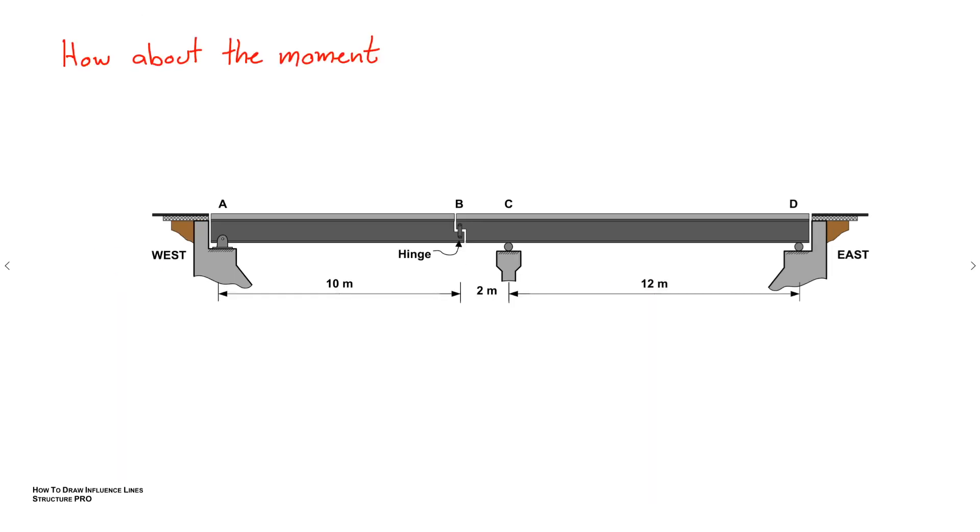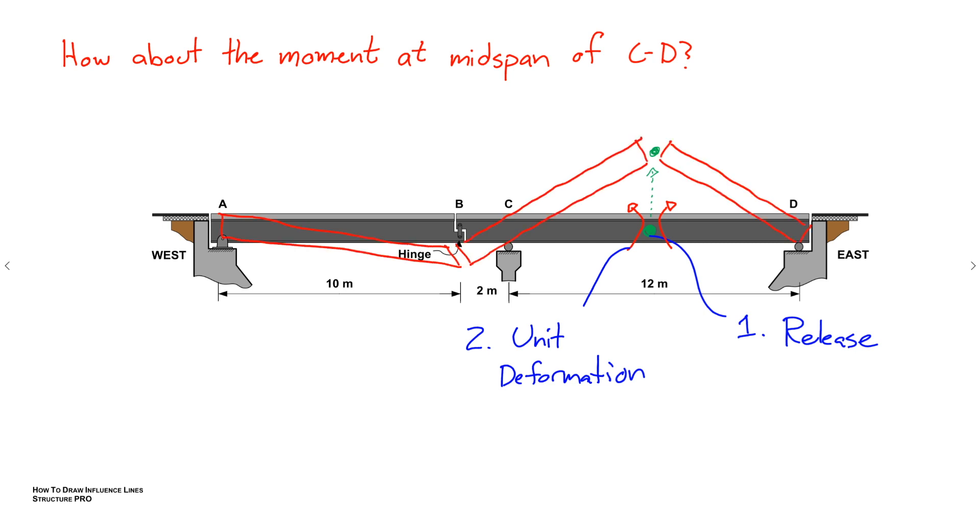Alright, so let's do this again. How about the moment at the mid-span of CD? Pause the video if we're going too quick. So number one, we release the structure, introduce a hinge. Number two, we're going to provide a unit deformation. We find out to obey the rest of the structure, we actually have to lift the spot at mid-span CD. And then we can just trace out the rest of the structure.